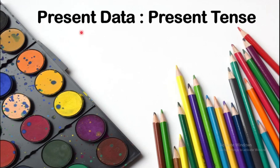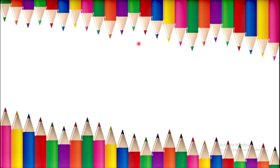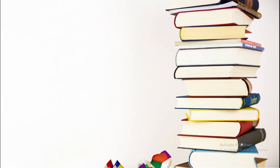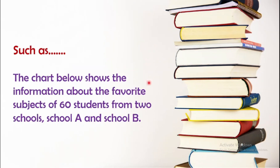If the data is in the present, you have to use present tense. It becomes a little more confusing when there is no year given. In this case, the test taker will need to pay more attention to the words used in the statement. For example: 'The chart below shows the information about the favorite subject of 60 students from two schools, School A and School B.' In this task you have to use present tense, but if a second form of verb is used in the statement, you will have to use past tense.